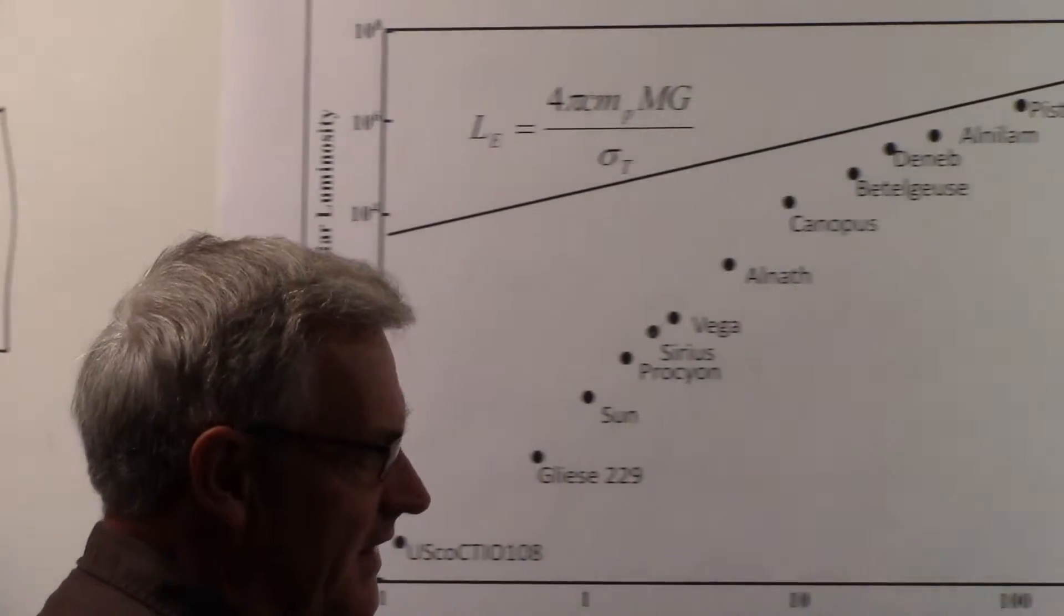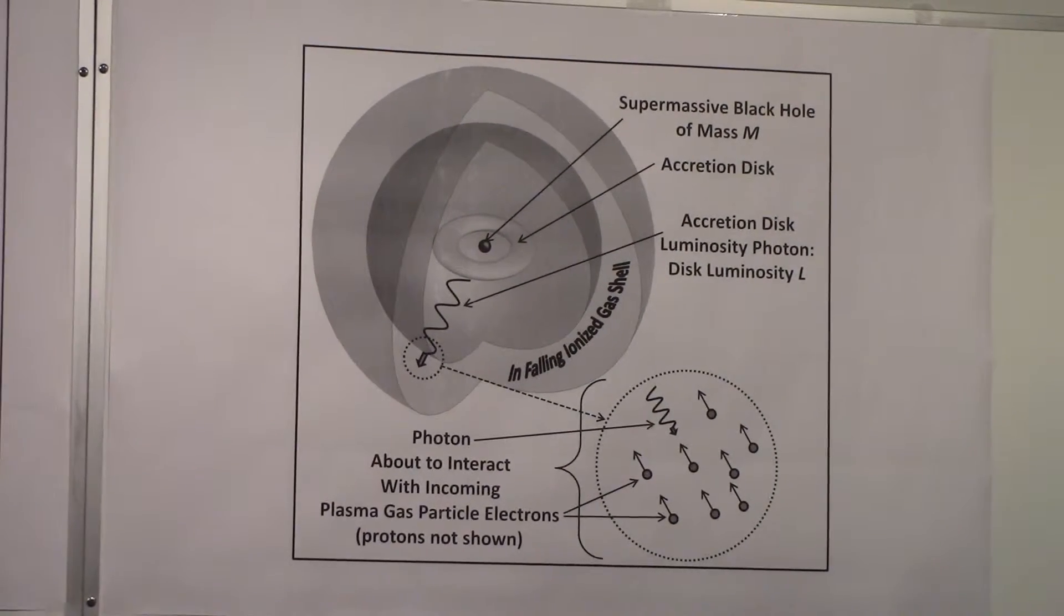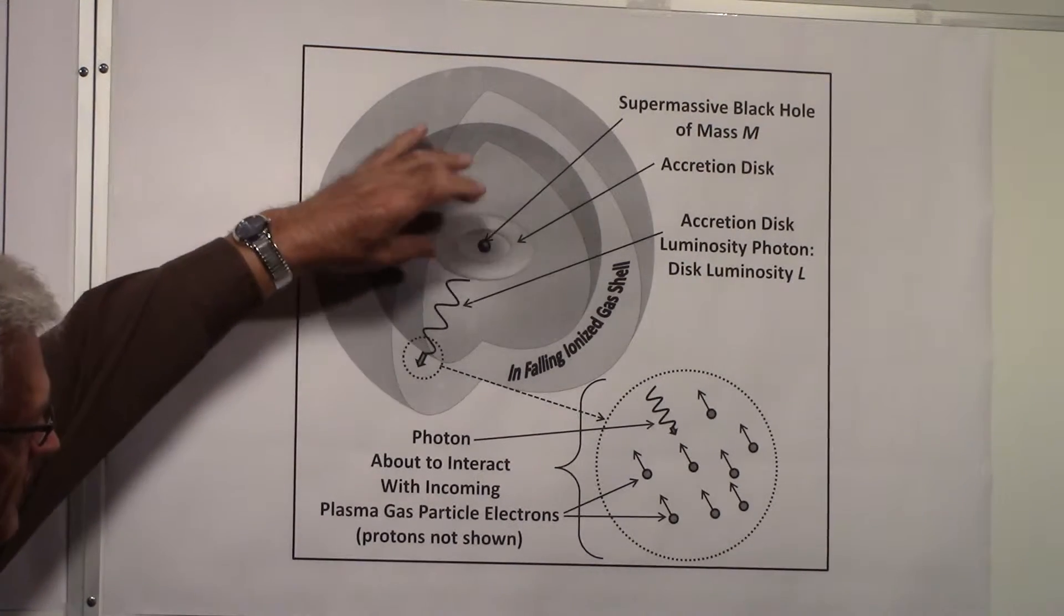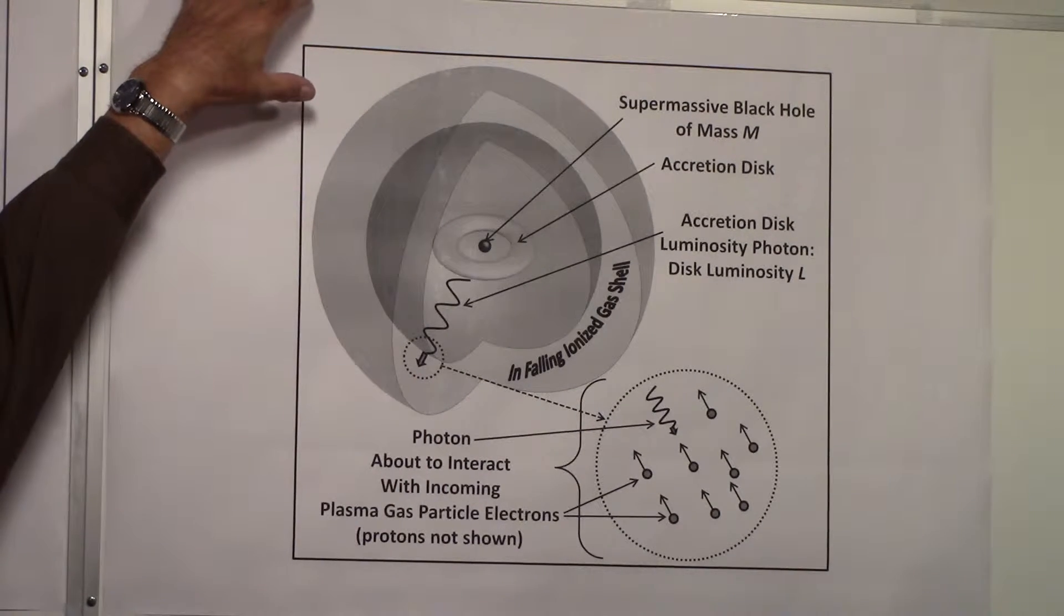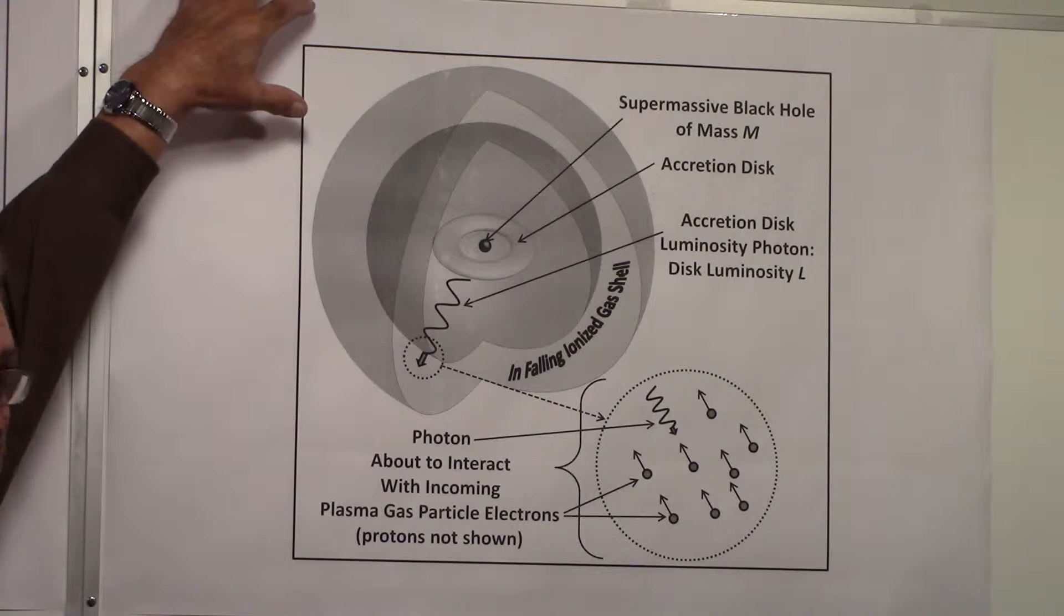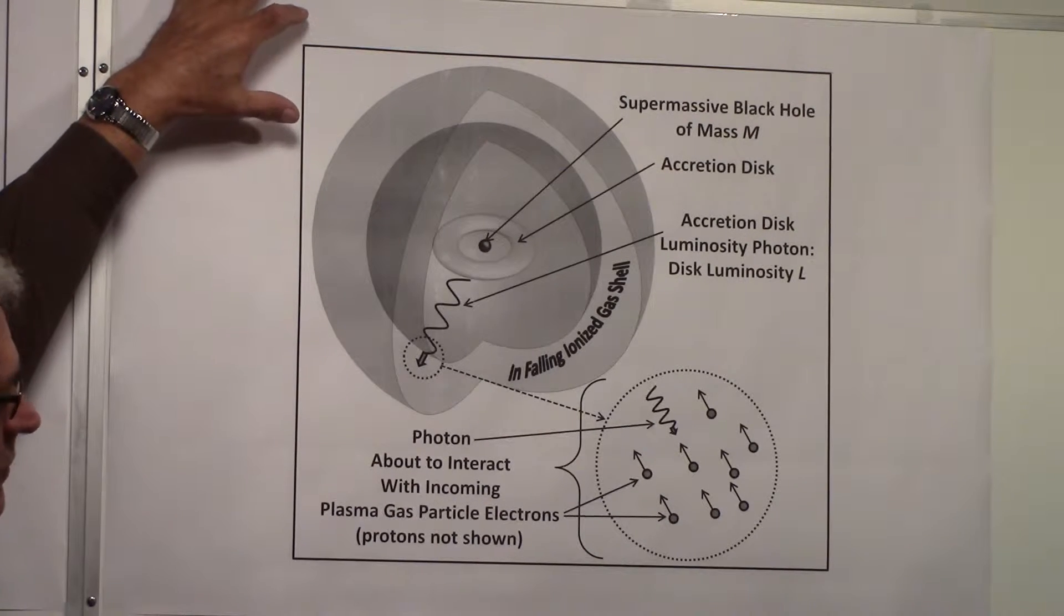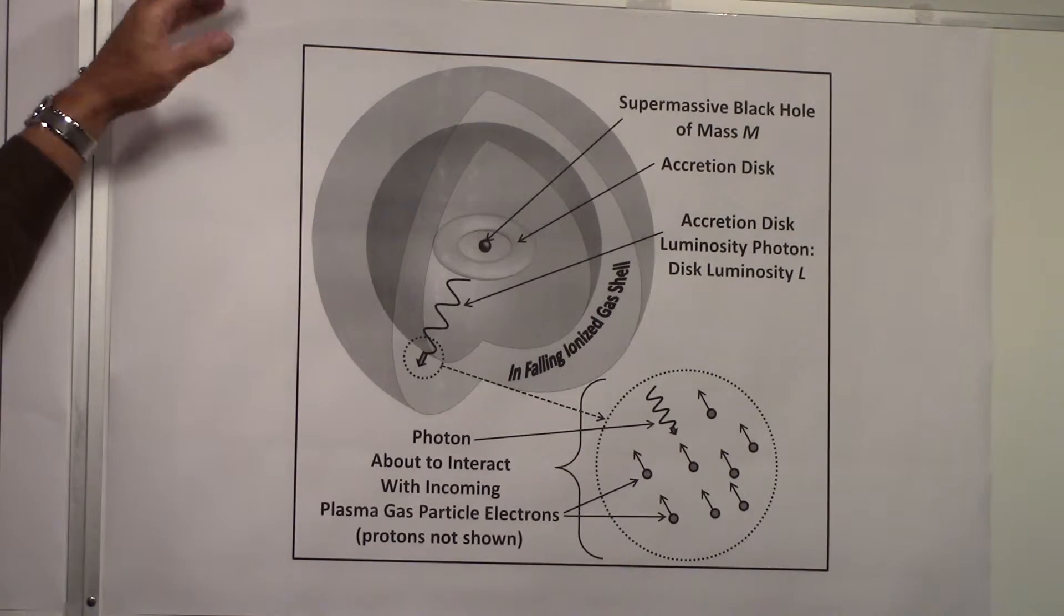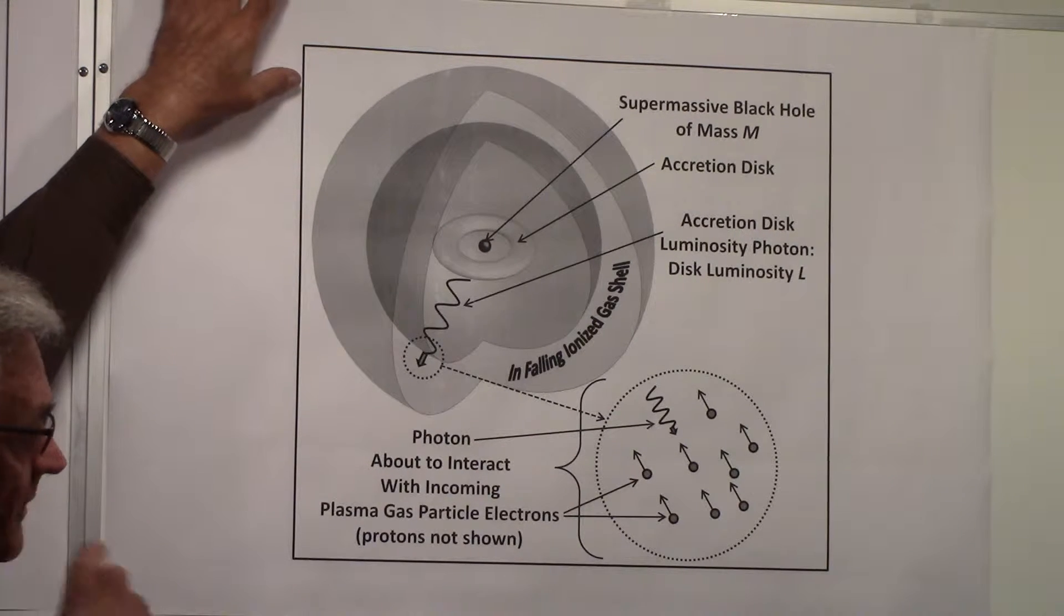I just want to briefly go over some of those things so we can apply it to a star. If we look here, the arrangement we talked about was we have a supermassive black hole and the accretion disc with infalling ionized gas coming into the accretion disc, and that increases the illumination produced by the accretion disc. The question was, if you just keep putting more and more mass in, will the luminosity just keep going up and up? We argued that would not happen, that there would be a limit, and that's where the Eddington limit comes in.